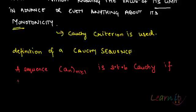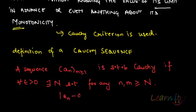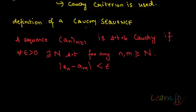...for any epsilon greater than 0, there exists some natural number capital N such that for any n and m greater than or equal to this capital N, the difference between a_n and a_m — the distance between a_n and a_m — is less than epsilon. That is, |a_n minus a_m| is less than epsilon.